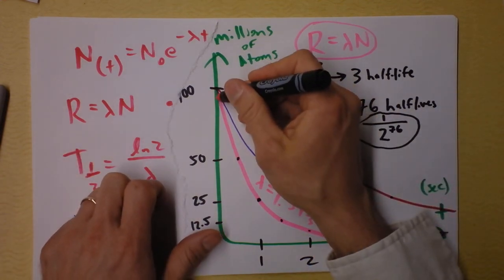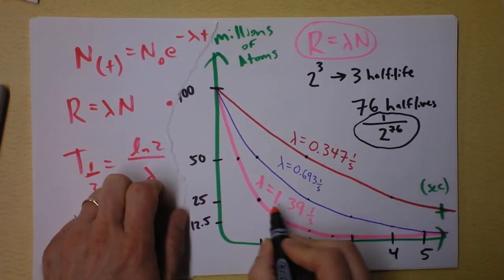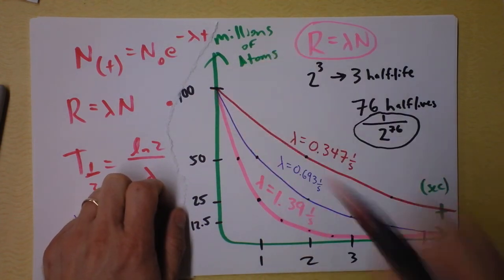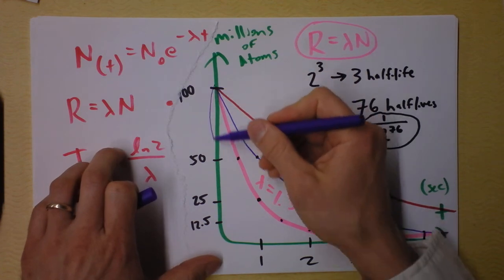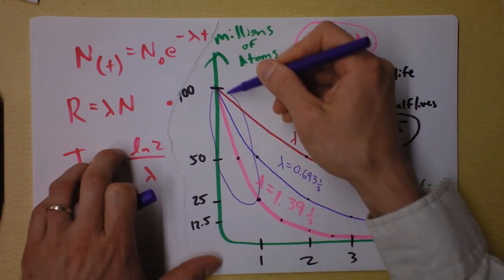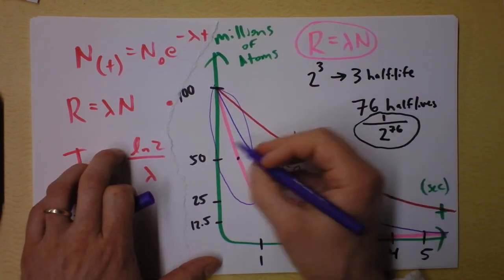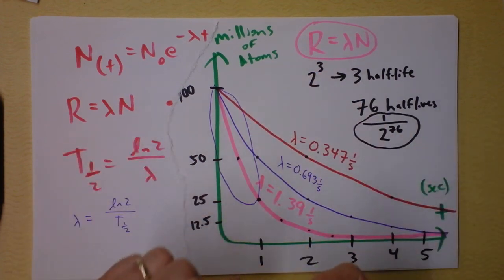But notice that n is rapidly decreasing. So it's not consistent to say that 1.39 hundred million would decay in that second, because over the course of that second, our lambda, no sorry, our lambda hasn't changed, but our n has greatly changed. So maybe you want to take an average of here. Oh man, you probably have to do some calculus. I don't want to talk about that.